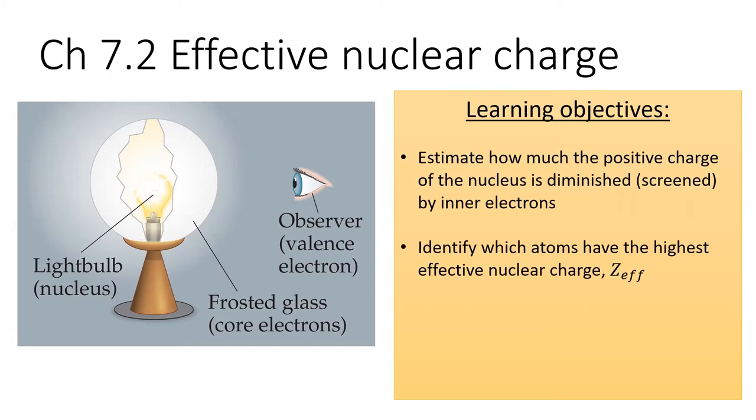Valence electrons live in the outermost energy levels of the atom. Valence electrons feel an attraction to the positive charge of the nucleus, but they are also repelled by other electrons closer to the nucleus, in the same way that a lampshade might diminish the light cast from a light bulb.